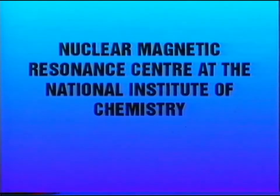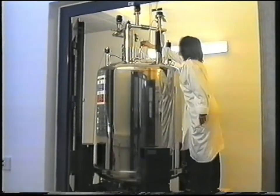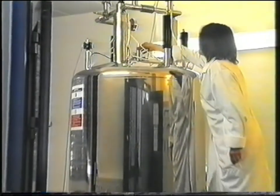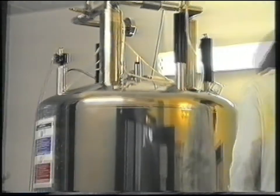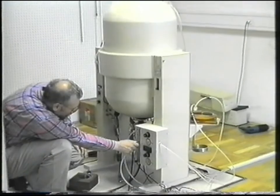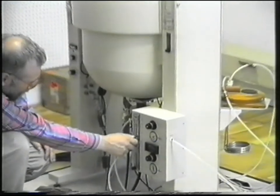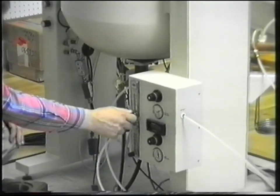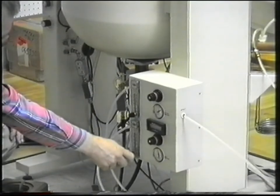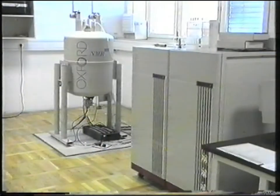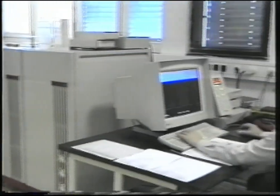The NMR Centre offers infrastructure and service for the collection and processing of NMR spectra to all institutions and companies that use NMR in their research. The 600 MHz spectrometer is used in the study of the three-dimensional structure and dynamics of complex systems with a high molecular mass, while two 300 MHz instruments are used by synthetic organic chemists.